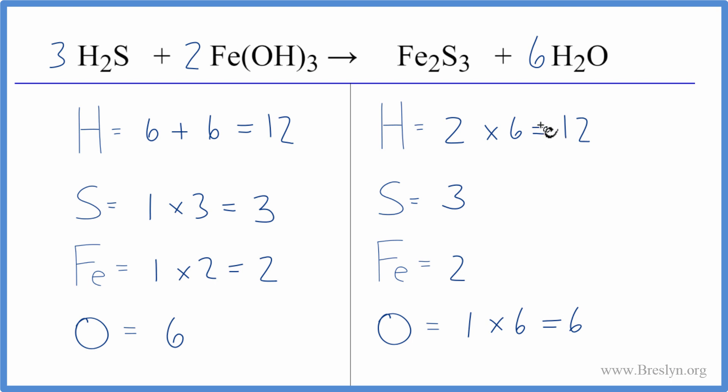This equation is balanced. So two things to be careful of: watch out when you have these parentheses, that means the subscript out here, we multiply that by both of the items in the parentheses. Also make sure if you have hydrogens here, don't forget these, you have to count all of those up. And finally, it's often helpful to leave the oxygen and hydrogen to last when you're balancing equations.